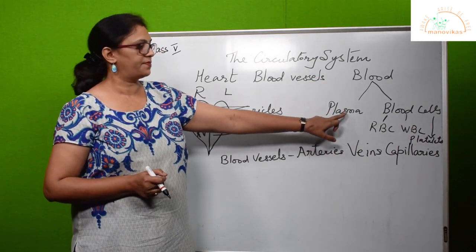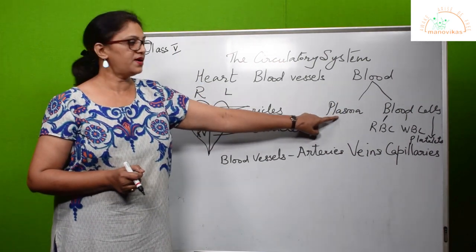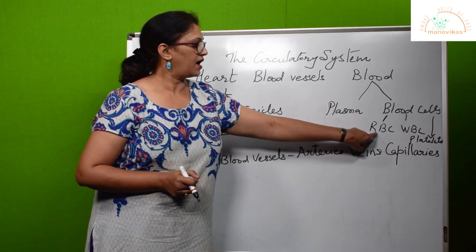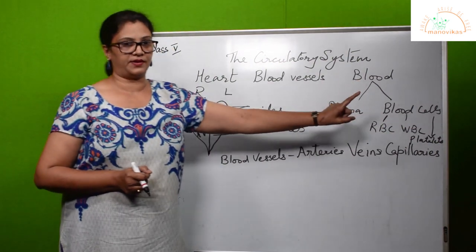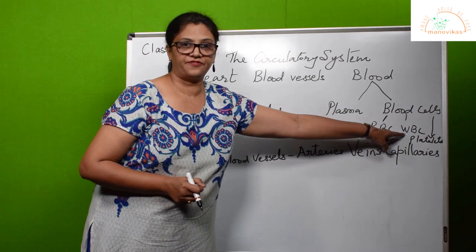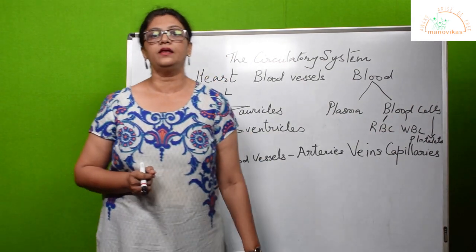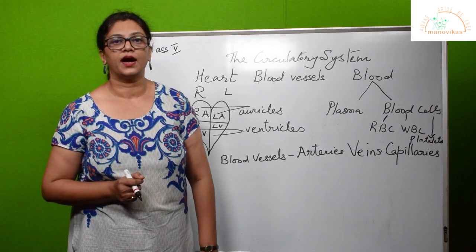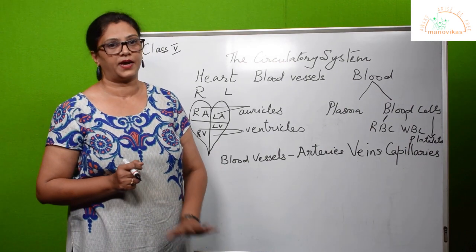Blood is made up of two parts: plasma and blood cells. Plasma carries nutrients and waste products. Blood cells are of three types: RBCs, WBCs, and platelets. Platelets help in clotting of blood. Next we need to understand the process of circulation of blood.